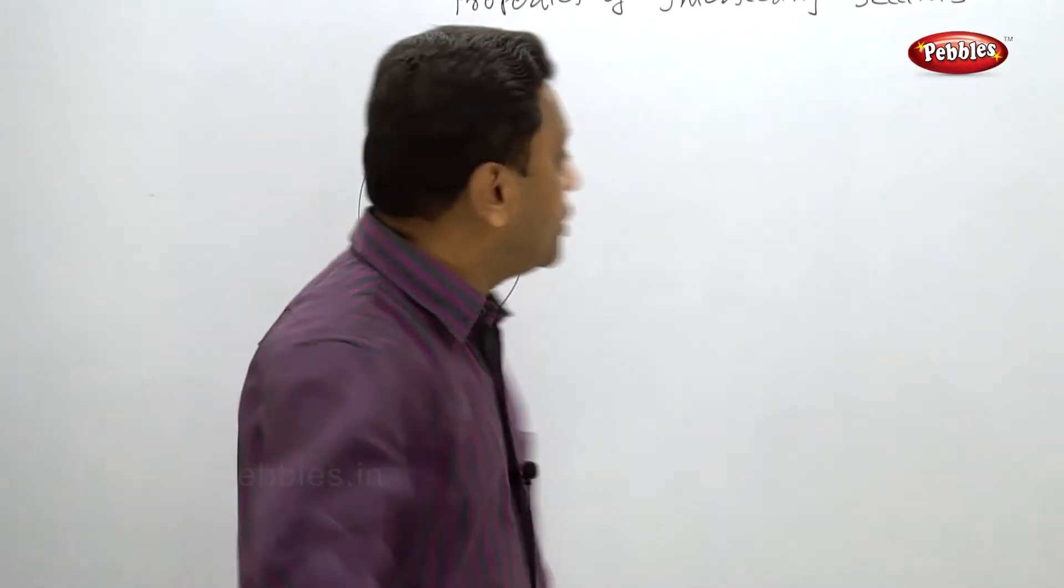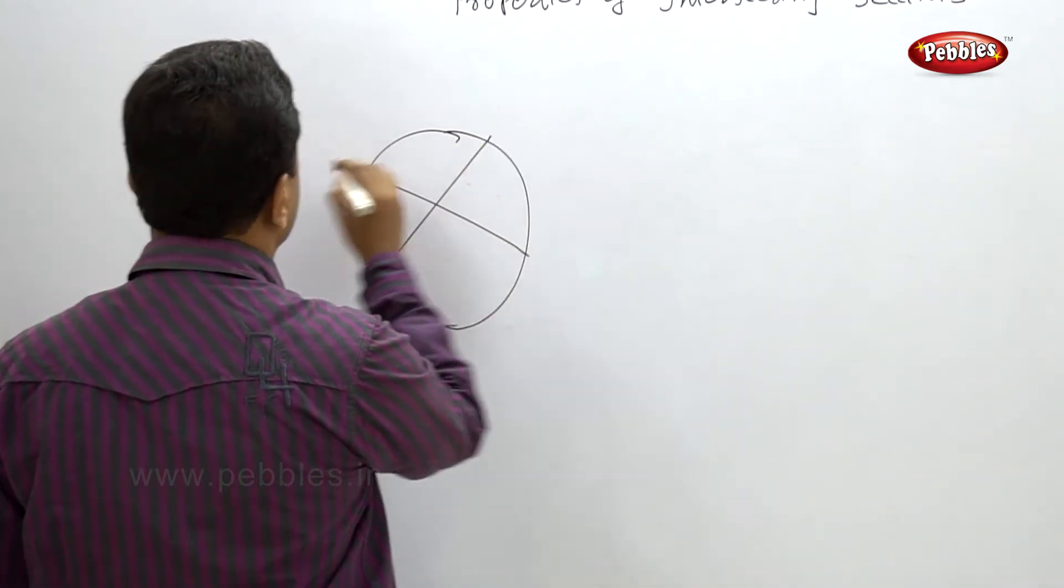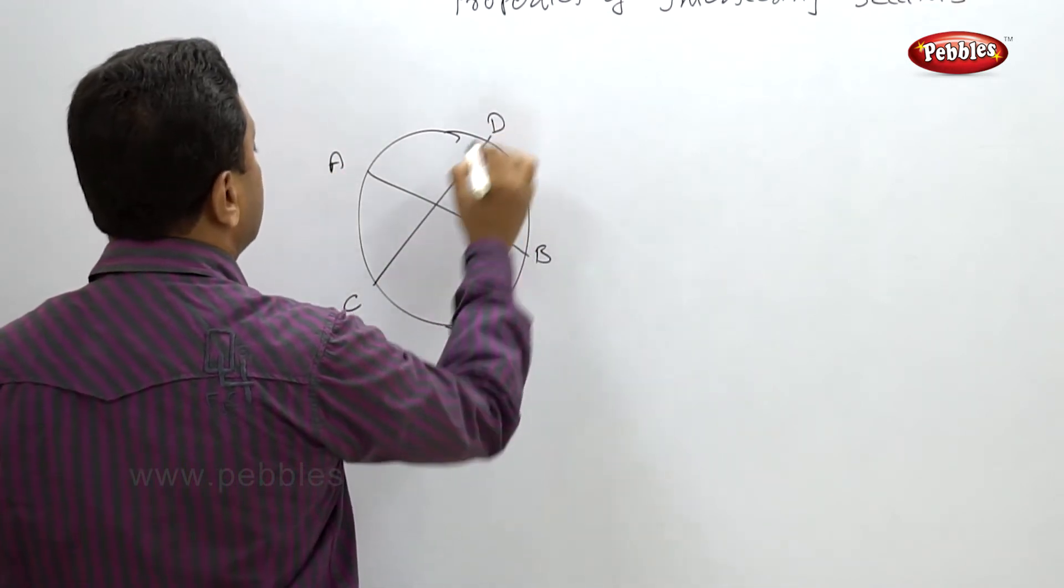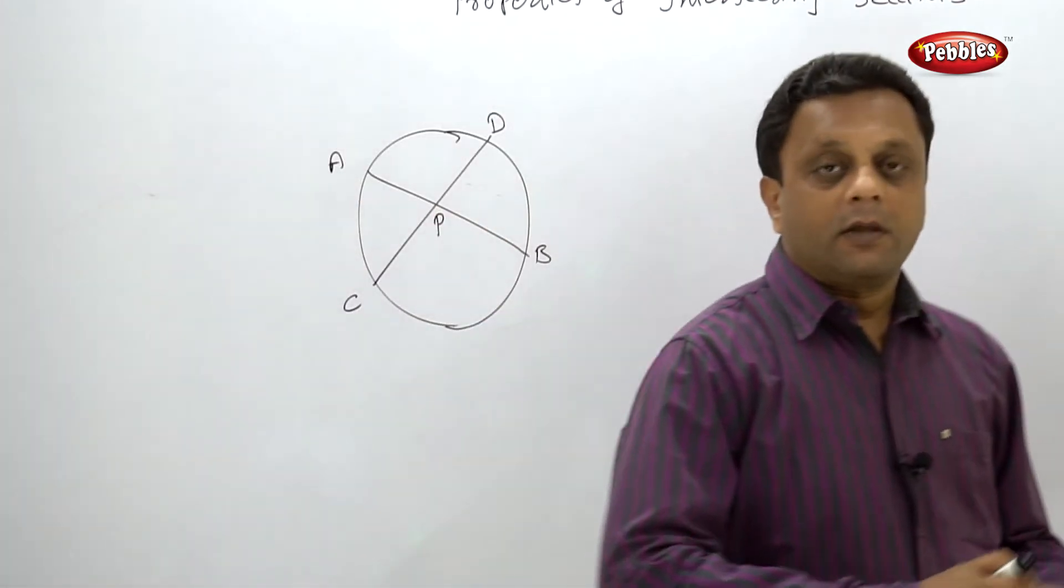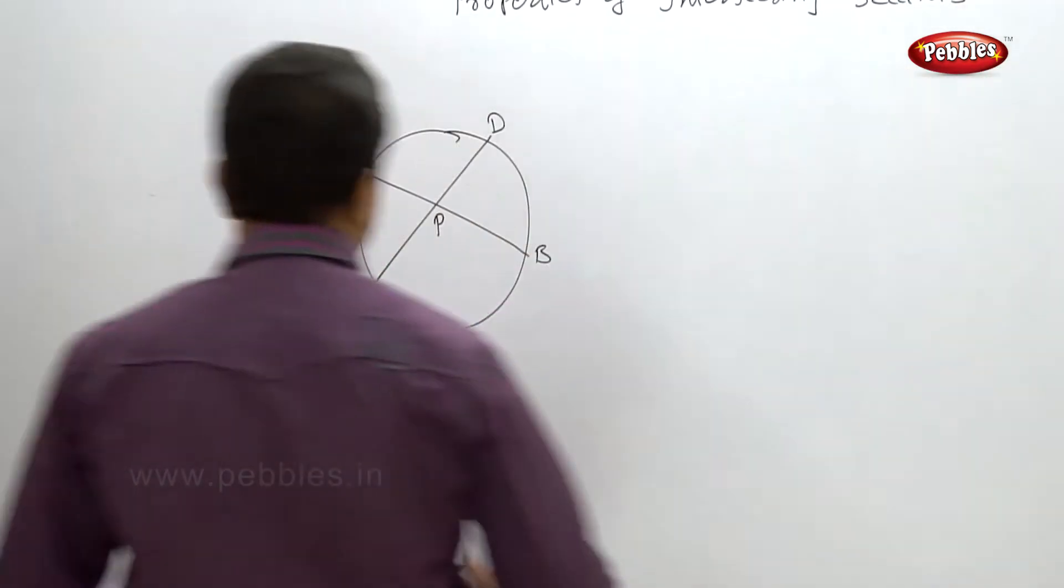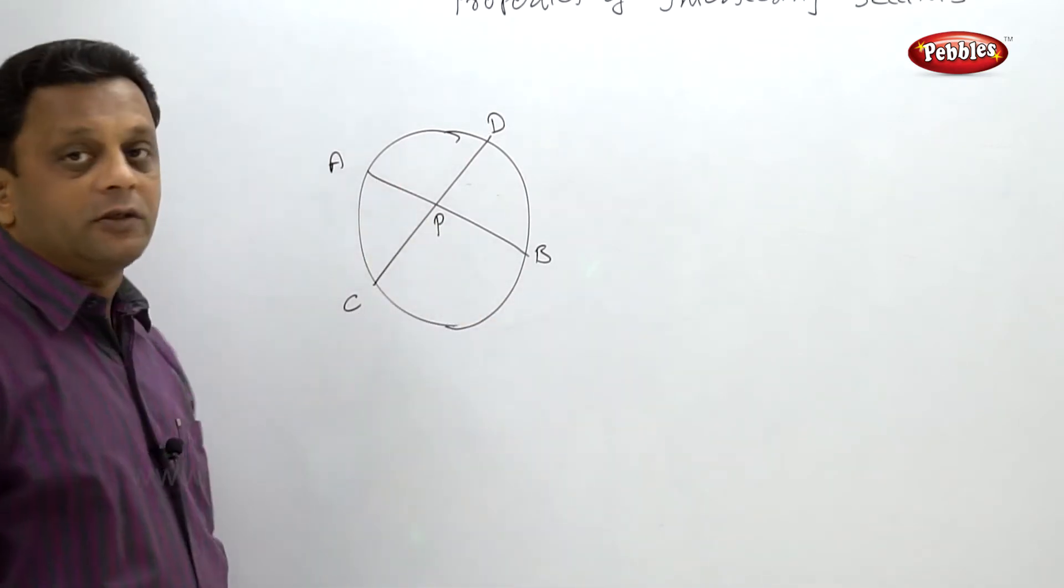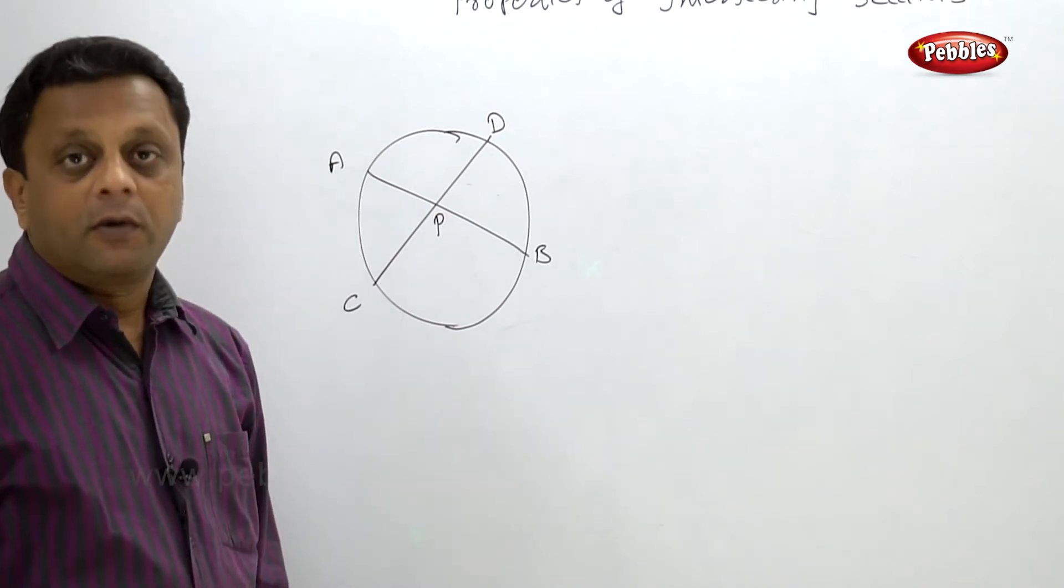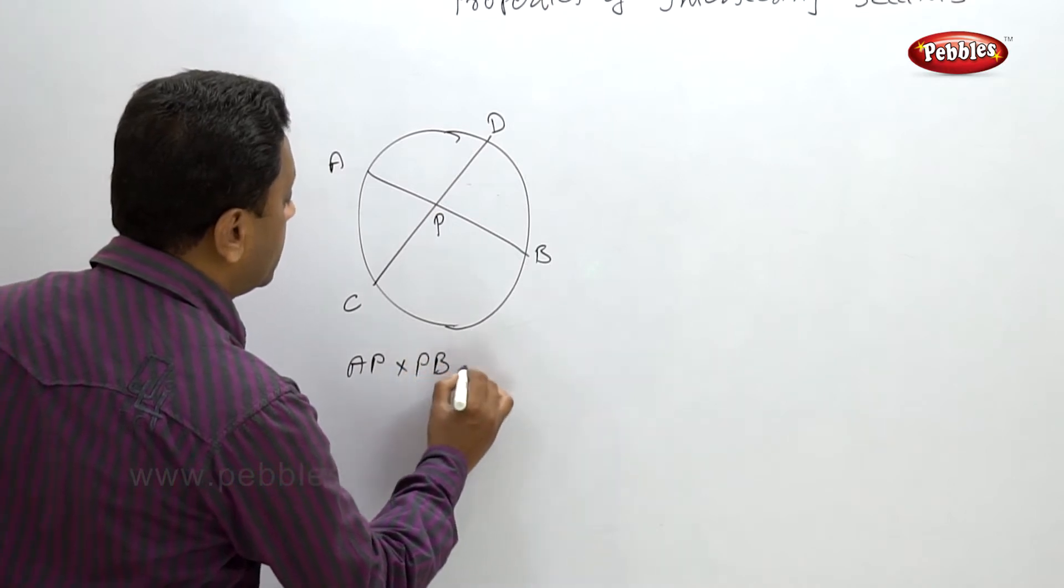Let's say this is AB and this is CD, and this is point P. They are intersecting inside the circle. The property says that AP into PB - that means the distance from the point of intersection to each point of secant - AP into PB is equal to CP into PD.